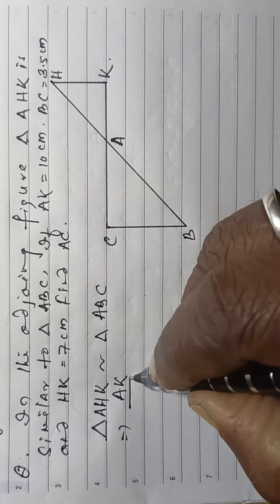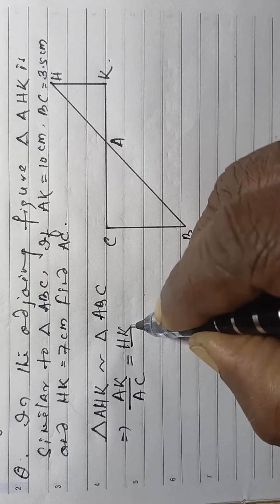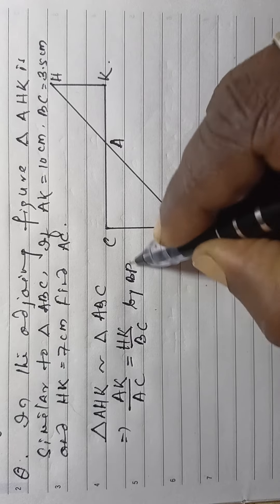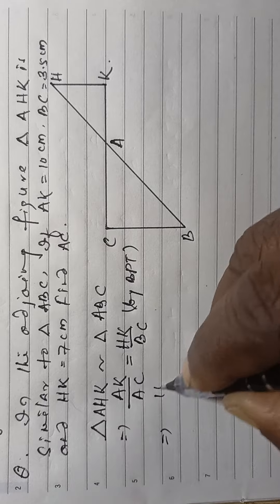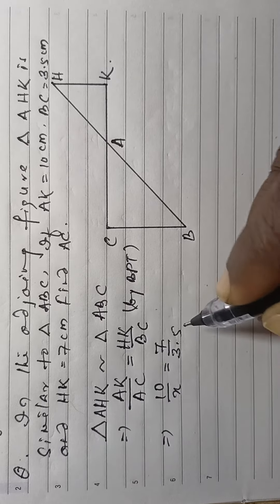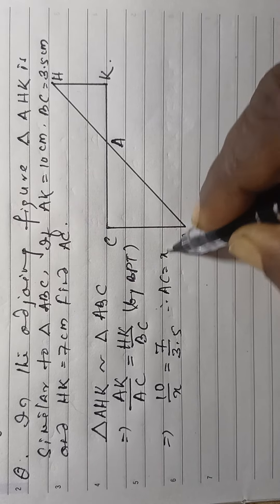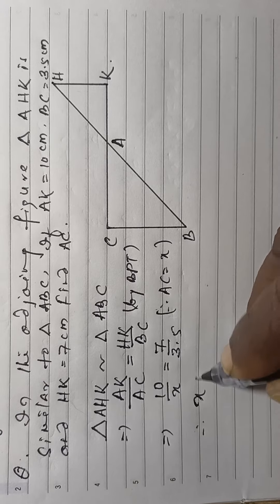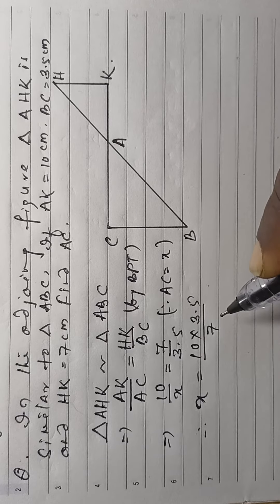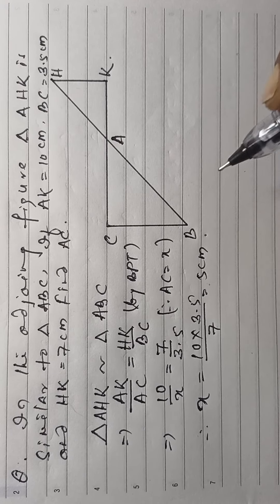Then AK by AC is equal to HK by BC, by BPT. Then 10 by X is equal to 7 by 3.5. As AC is equal to X, then X is equal to 10 by 3.5 divided by 7. That is 5 cm.